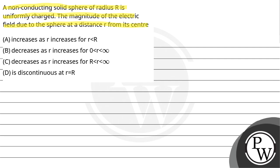Option A: increases as r increases for r less than R. Option B: decreases as r increases for 0 less than r less than infinity. Option C: decreases as r increases for R less than r less than infinity. And option D: it is discontinuous at r equals radius.